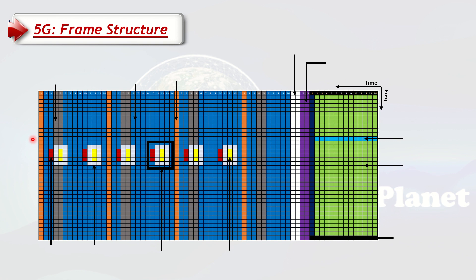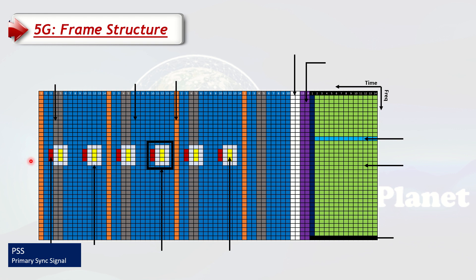The first and foremost channel is called the Primary Sync Signal (PSS). This is the first channel when the UE tries to access the 5G cell — it needs to read PSS to have synchronization. It gives you the frequency of this block as well, and it also starts giving you part of the PCI, which is the Physical Cell Identifier.